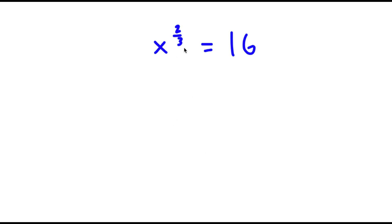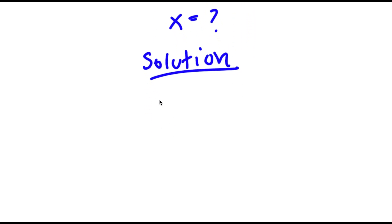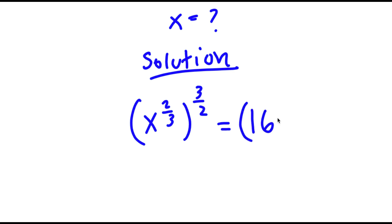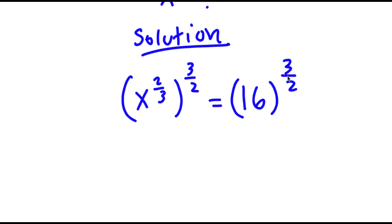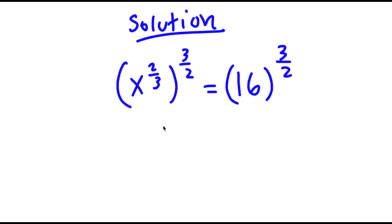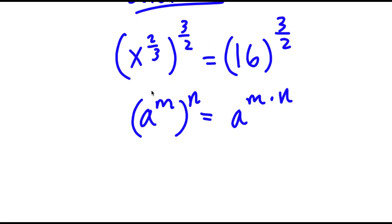In this problem I have x to the power of 2 over 3 is equal to 16, and I want to find x. I'm going to take the power of 3 over 2 on both sides. The reason is: if I have a to the power of m to the power of n, that equals a to the power of m times n. We want to make the exponent 2 over 3 become 1, and multiplying by 3 over 2 does that since they are reciprocals.